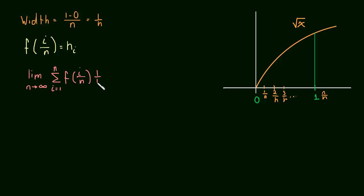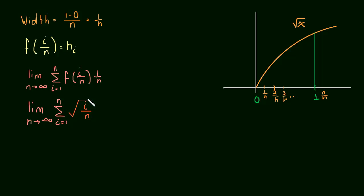So the expression is f(i/n) times 1/n. Now this is where the problem lies, because we have to plug i/n into the function, which is the square root of x. We'd plug in our formula f(i/n) into the function and we're going to get the square root of i over n. This is where we're in trouble — we don't have a formula for the sum of the square root of i. We have a formula for the sum of i, of i squared, of a constant, but we don't have this formula, so we can't use this summation.